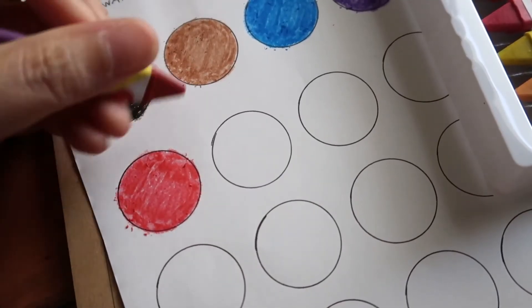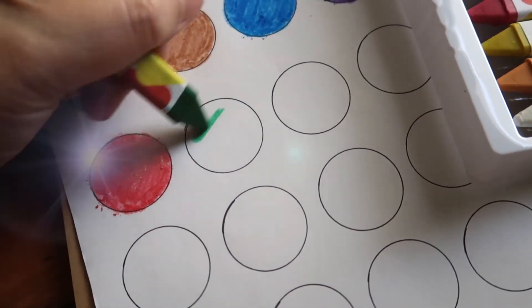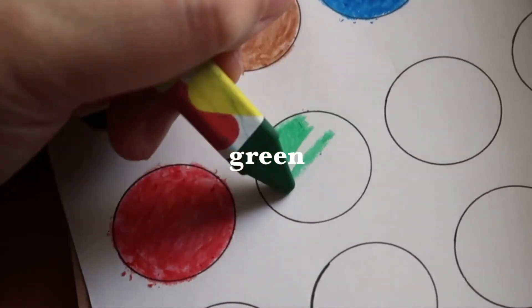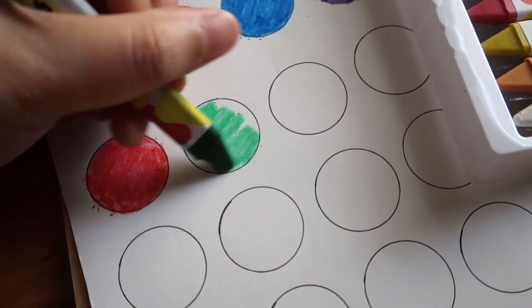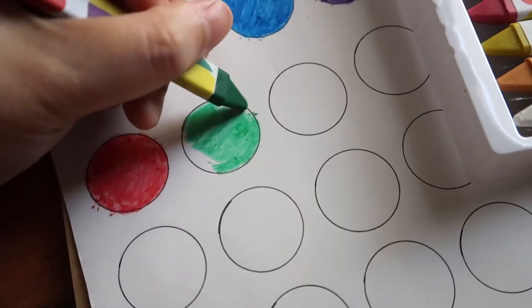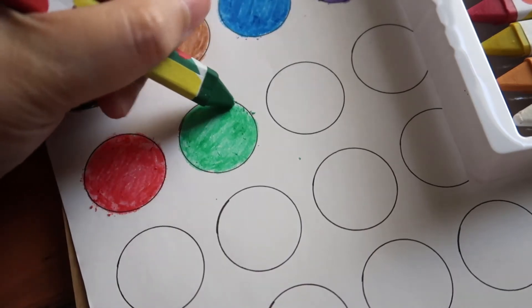Daiso Japan Crayon. This one in particular is crumbly. Go green. I like how it starts. It's soft. And wow, it became lighter, so I have to put more pressure. How I wish I can measure the pressure that I'm applying.